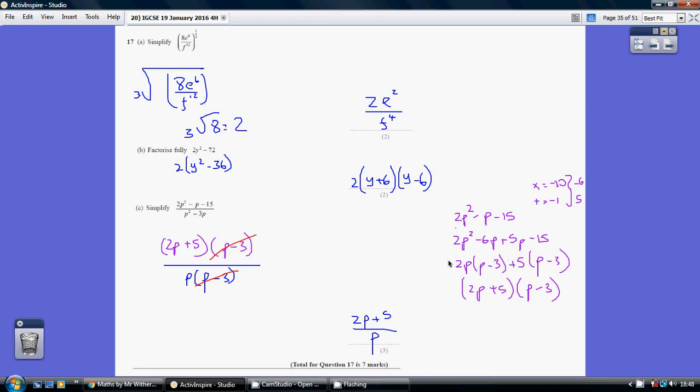Then our final pair of brackets is the bits which aren't in a bracket already, so the 2p plus 5. And our second bracket is the repeated bracket, the p minus 3. So that is how I got the numerator.